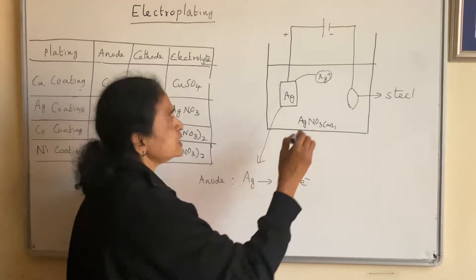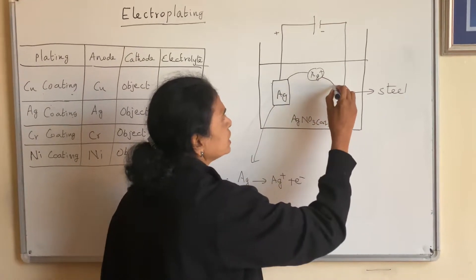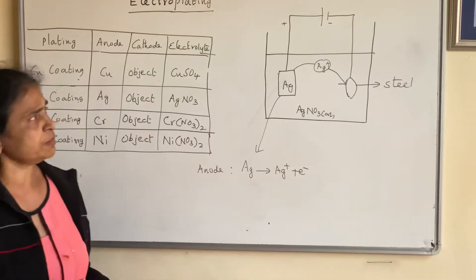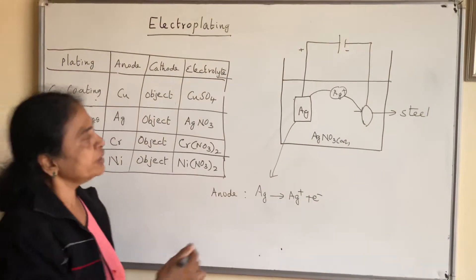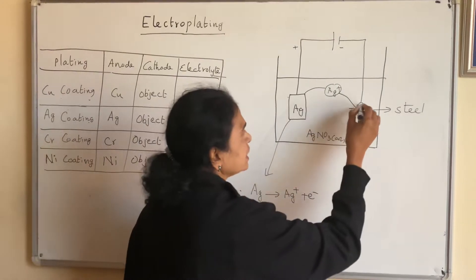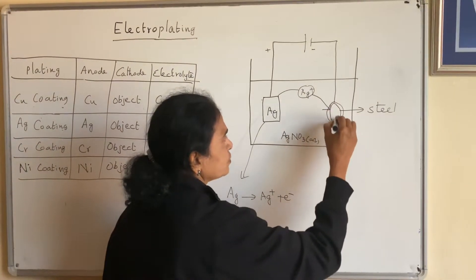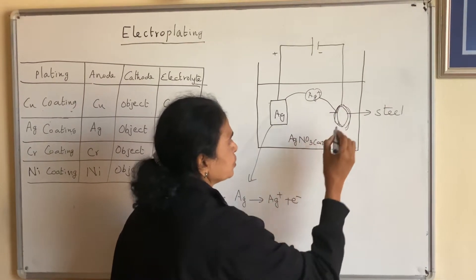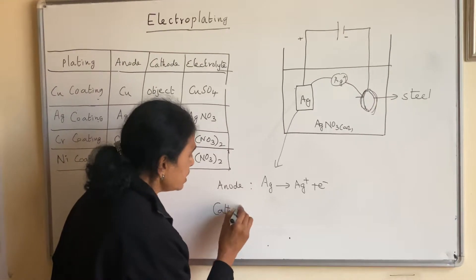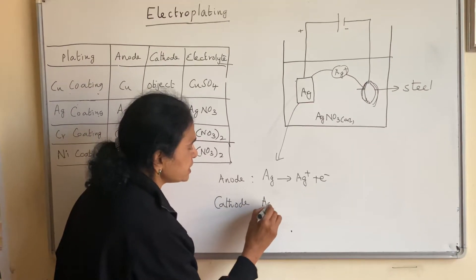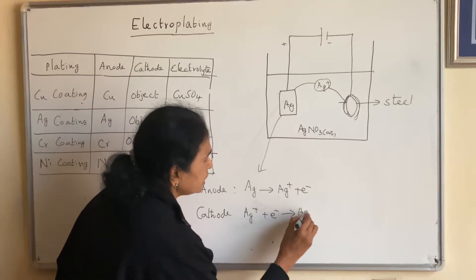And this Ag+ goes towards the cathode. That means it goes into the electrode. It may not be exactly the same Ag+, but the Ag+ ions from the electrolyte will go to the steel and give a nice coating of silver on top. There will be a coating of silver on top of this spoon. So what is happening at cathode? The same reaction but in reverse. That means reduction takes place here. Ag+ plus electron gives Ag.